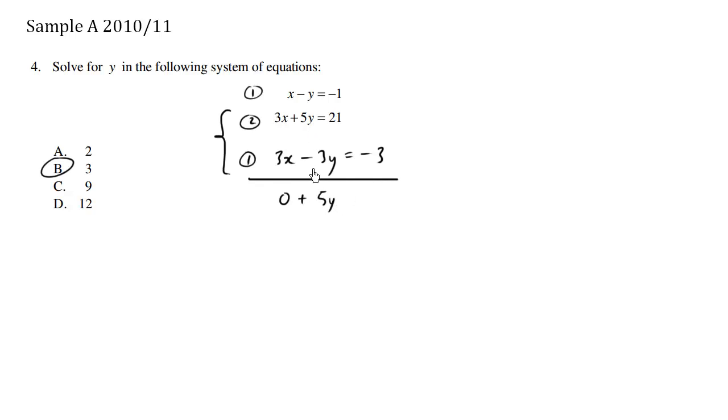So I have 5y minus negative 3y, because it's this here, minus negative 3y. So the two minuses becomes a positive. This equals to 21, which is the top equation, minus negative 3. So I'm subtracting down this way, top minus the bottom. We're allowed to do that. We're allowed to add equations. We're allowed to subtract equations.